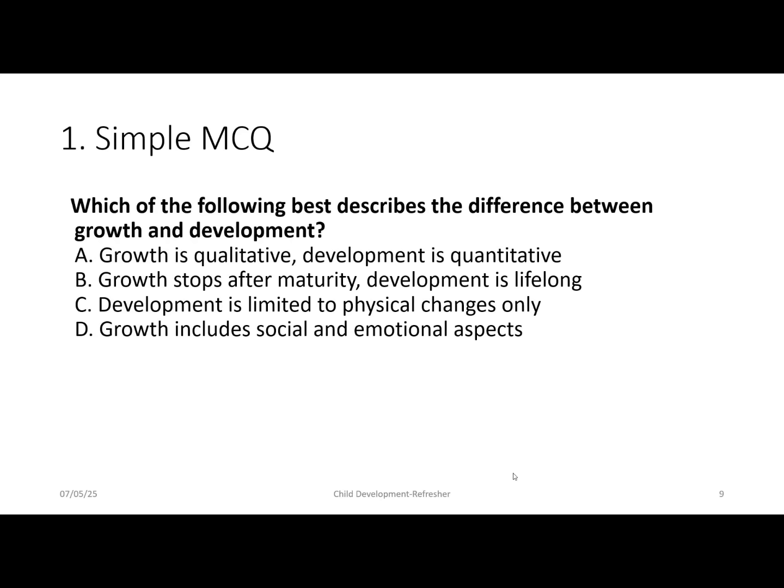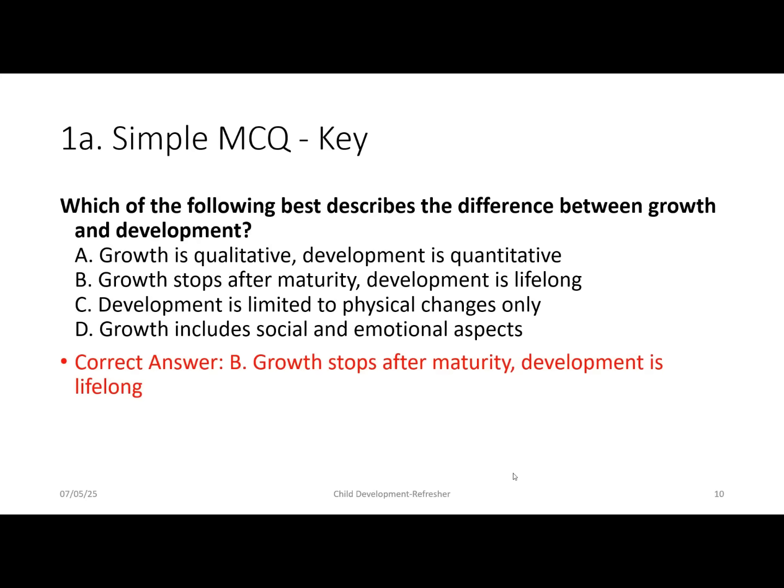The first type is a simple multiple choice question. You have a stem and four options and must choose the correct one. Example: 'Which of the following best describes the difference between growth and development?' Option A: growth is qualitative, development is quantitative. Option B: growth stops after maturity, development is lifelong. Option C: development is limited to physical changes only. Option D: growth includes social and emotional aspects. The correct answer is B — growth stops after maturity and development is lifelong.